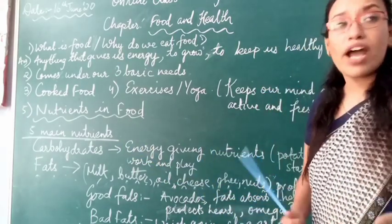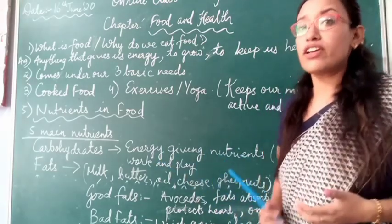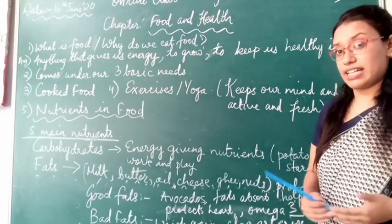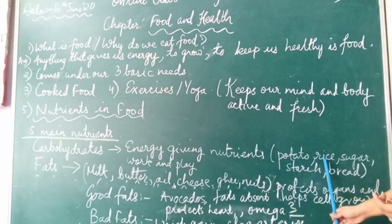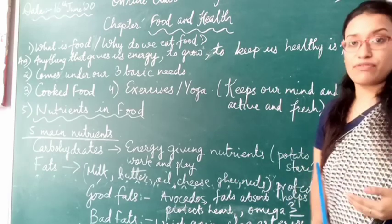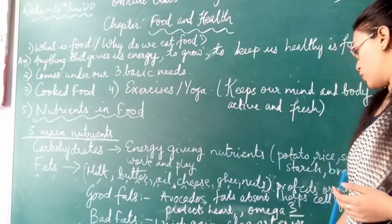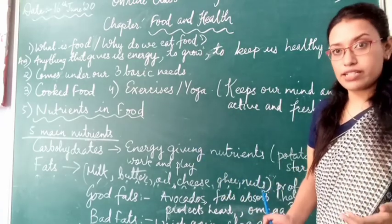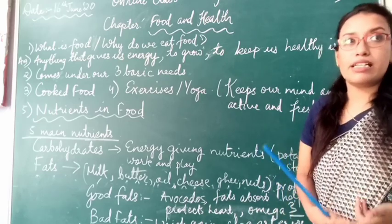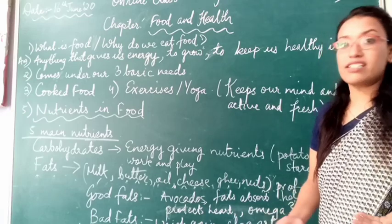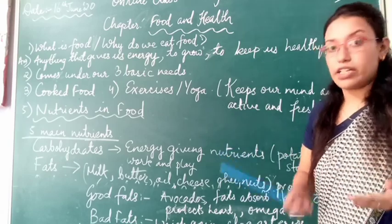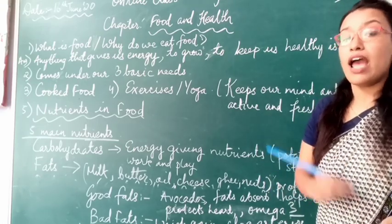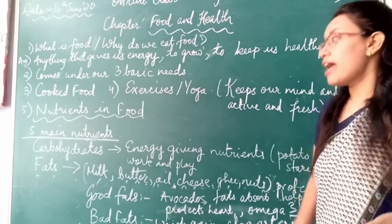What are carbohydrates? We need carbohydrates because they are energy-giving food. Foods from which we get carbohydrates include potato, rice, sugar, starch, and bread. When you don't eat your staple food like rice or wheat — which we eat twice a day at lunch and dinner — we don't get energy. That energy is stored in our body and helps it to function nicely.